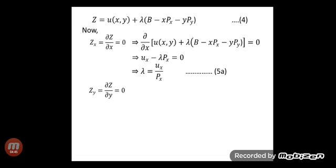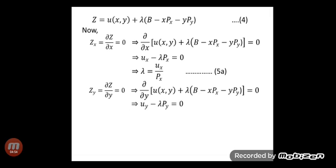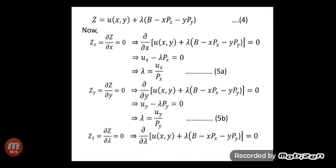Similarly, setting ∂z/∂y = 0, we differentiate the Lagrange function with respect to y and get uy − λ·py = 0, which gives λ = uy/py, that is equation number 5b. Setting ∂z/∂λ = 0, we differentiate the Lagrange function with respect to λ and get b − x·px − y·py = 0, which is equation number 5c.